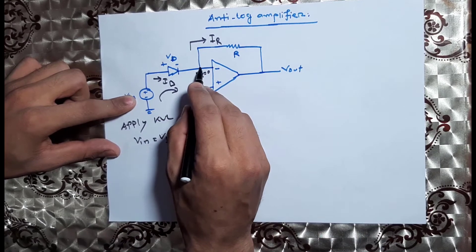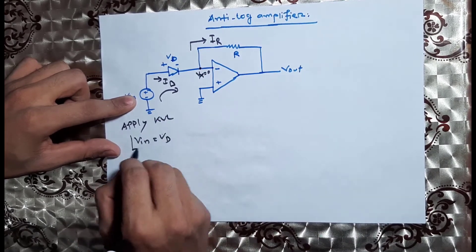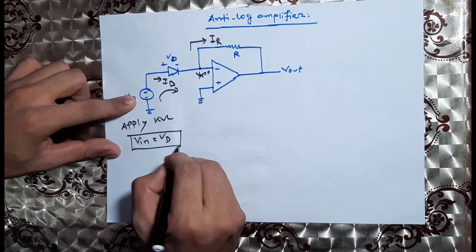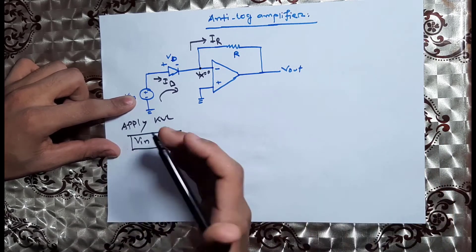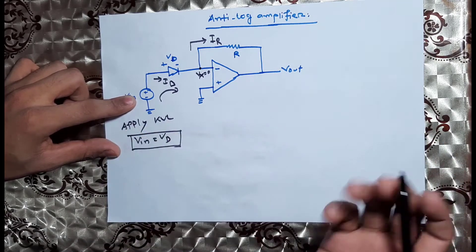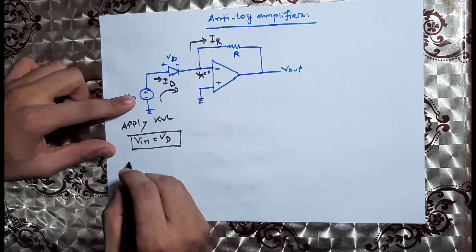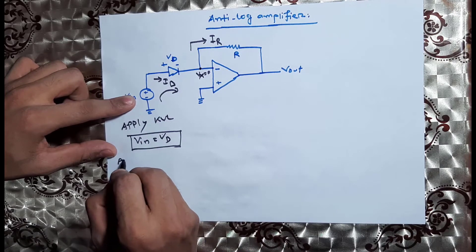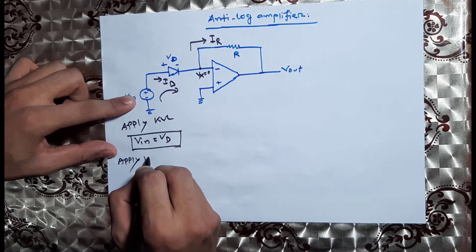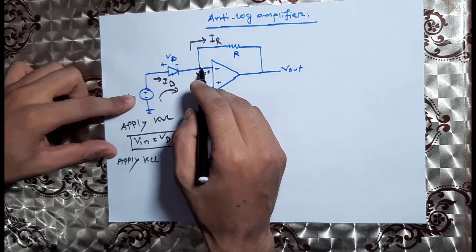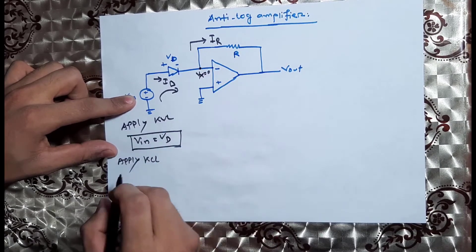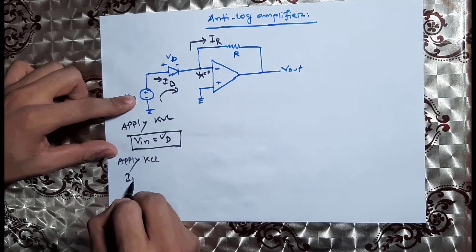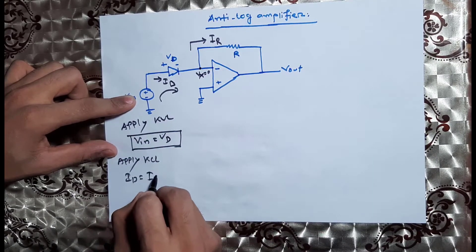Now we will apply KVL again. We will see that the equation gives us Vd. Applying KVL: the current through the resistor is ir, and the equation is equal to ir.